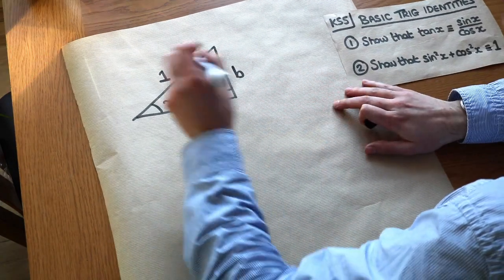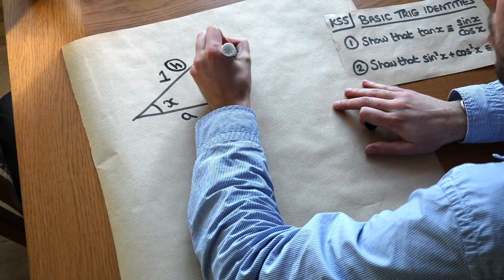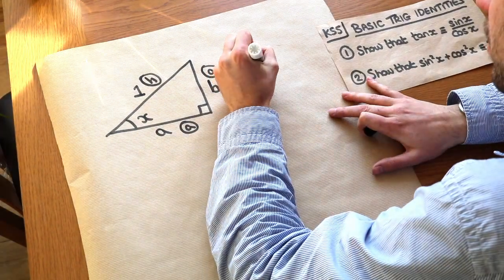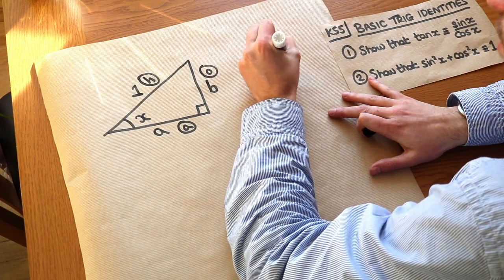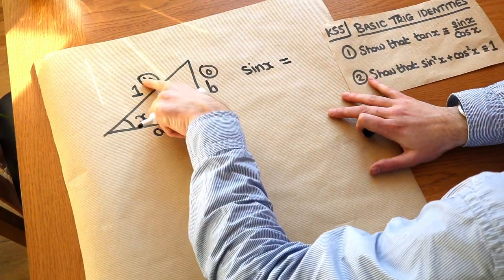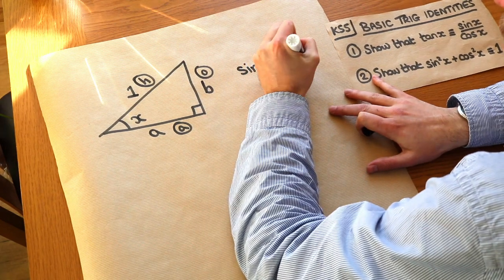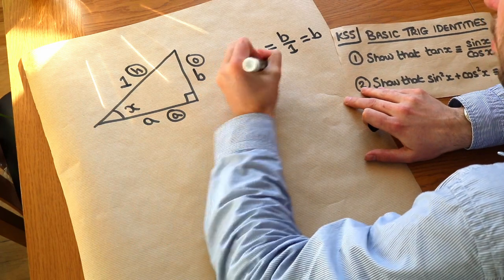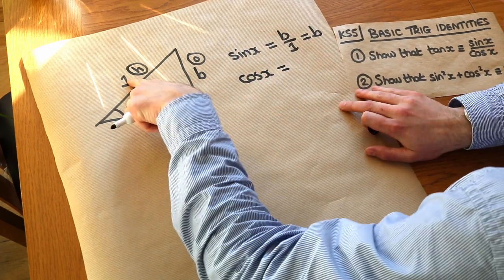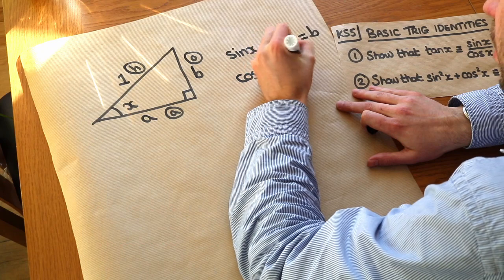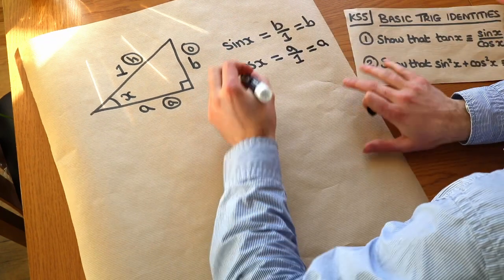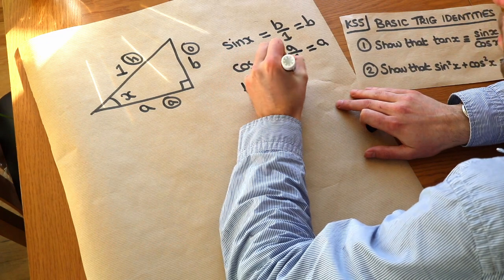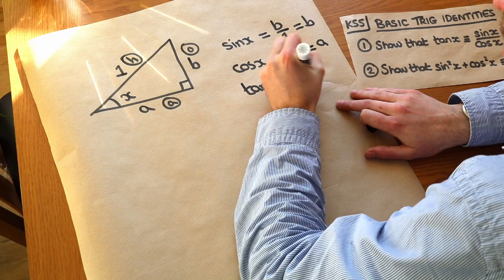If we label the sides, we know that this is the hypotenuse, this is the opposite, and this is the adjacent. So using basic trigonometry, we know that sine of x is equal to the opposite over hypotenuse, so b over 1, which is just b. And we know that cos of x is equal to adjacent over hypotenuse, so a over 1, which is just a. And we also know that tan of x is going to be opposite over adjacent, which is b over a.